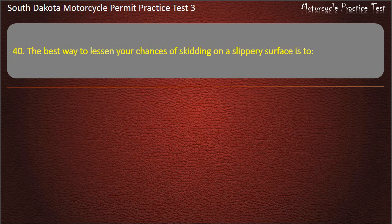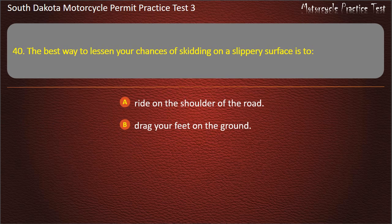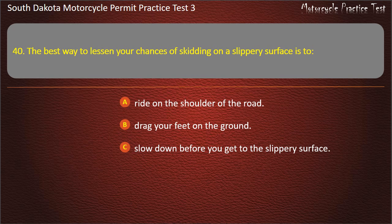Question 40: The best way to lessen your chances of skidding on a slippery surface is to: Ride on the shoulder of the road; Drag your feet on the ground; Slow down before you get to the slippery surface; Maintain a constant speed. Answer: Slow down before you get to the slippery surface.